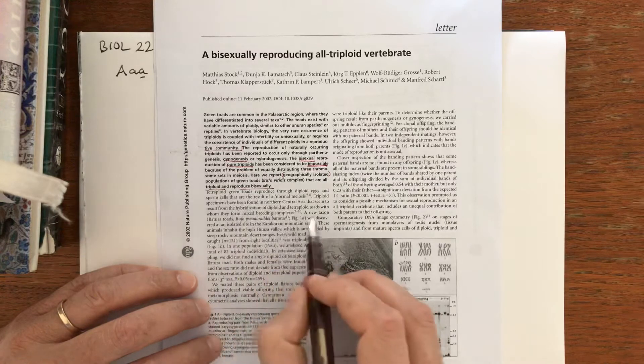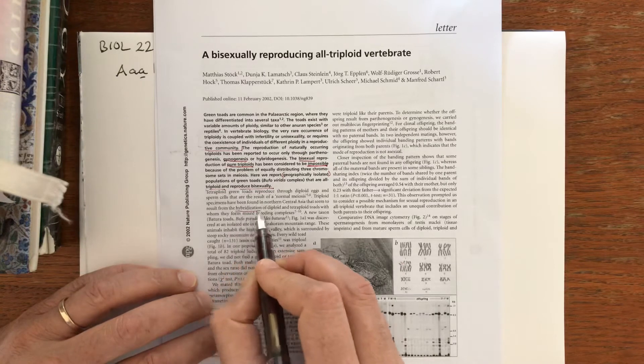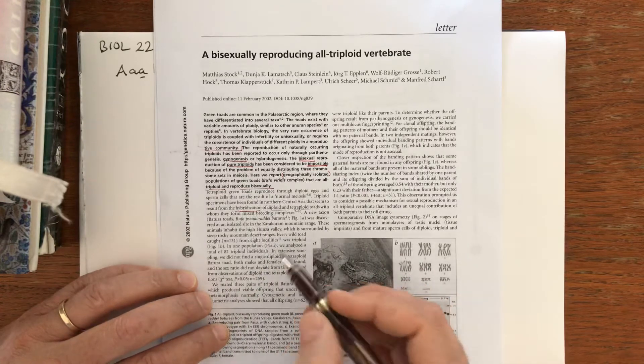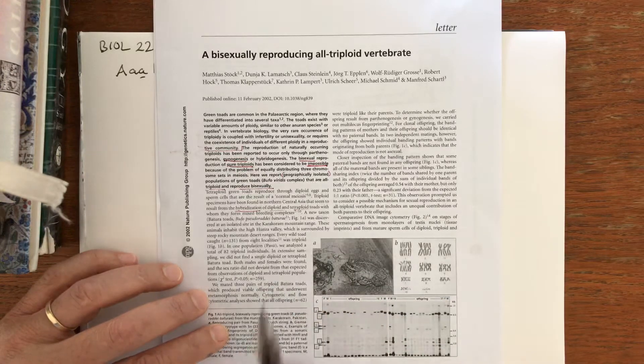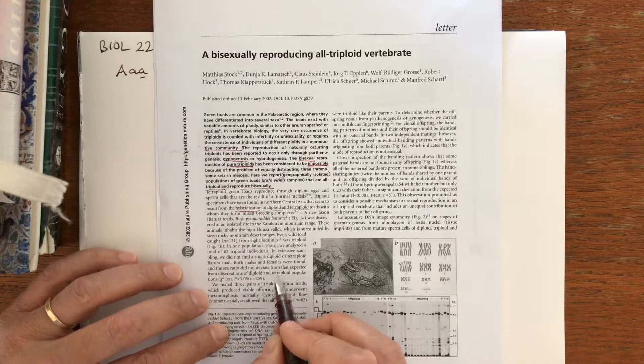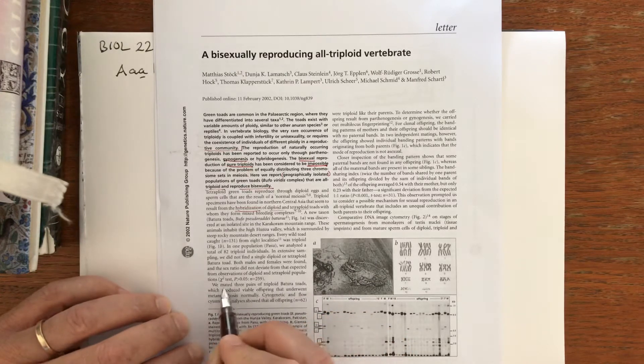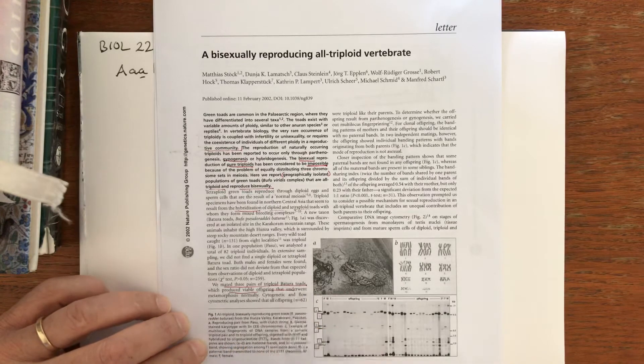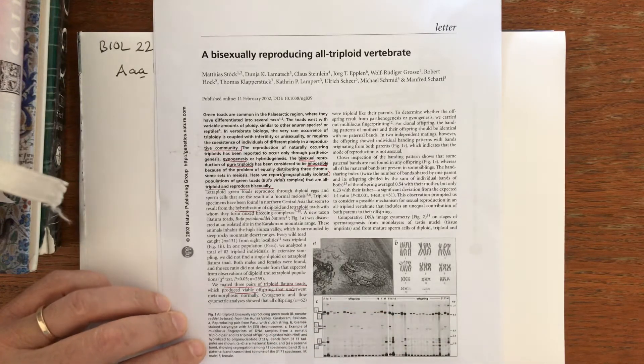There are examples of triploids being found that result from hybridization of diploid and tetraploid. There's geographic isolation, which is important to show that that's not happening. They managed to find a population where they were all triploid and they managed to mate them in captivity, and they produced viable offspring. So it's not just observations; they did a demonstration.